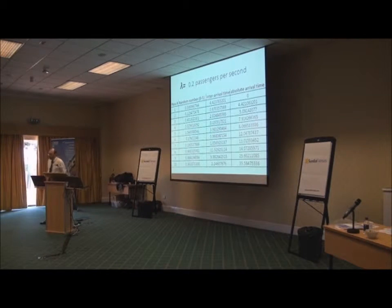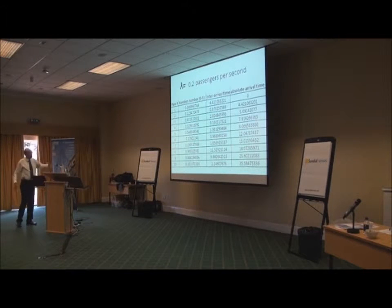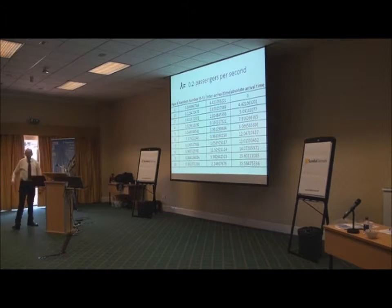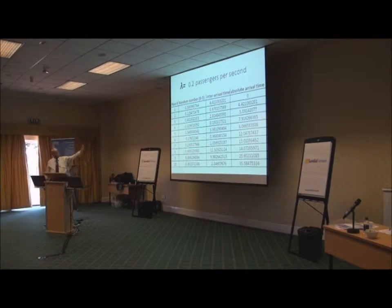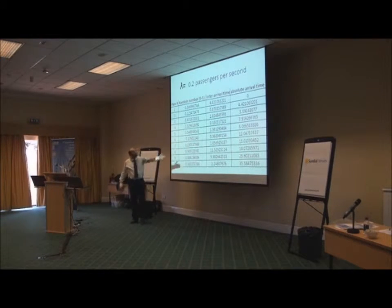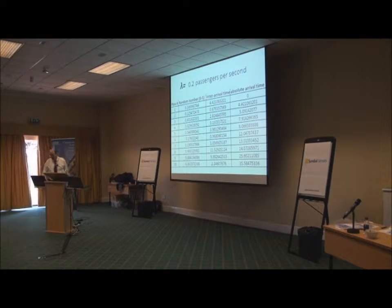Let's have a look at the Poisson arrival process. It's described by the Greek letter lambda, with units of passengers per second. If you stood in the lobby and watched passengers arrive, you'd see that every second 0.2 of a passenger arrives — so every five seconds a full passenger arrives. Or 1 over lambda: every five seconds one passenger arrives. To simulate it in software, we take a random number between 0 and 1, change that into an inter-arrival time — so between the first passenger and the second there's 0.5, 4.4 — and that gives us an absolute arrival time.